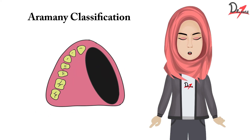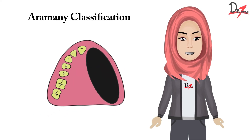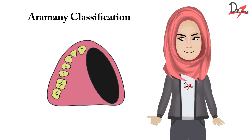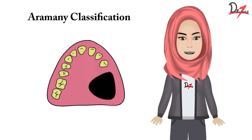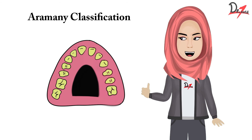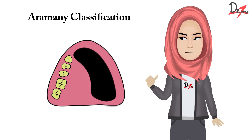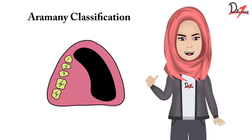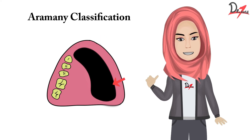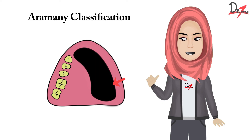Class 1 is midline resection — it is till the midline and one side is lost. Class 2 is unilateral resection — only one side is lost and it is not till the midline. Class 3 is central resection — the central part of the palate is gone. Class 4 is bilateral antero-posterior resection — it crosses the midline, so it is bilateral, and it involves both anterior and posterior portions.